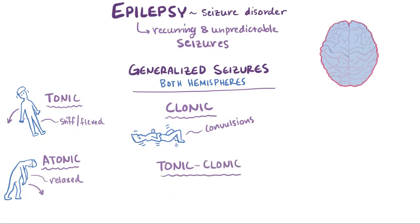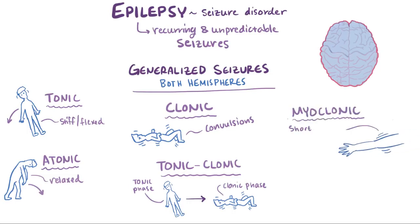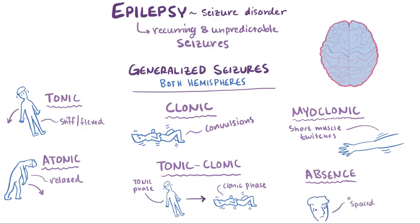Tonic-clonic seizures are the most common generalized seizures, where people experience a tonic phase where the muscles suddenly tense up, followed by a clonic phase where muscles rapidly contract and relax. Myoclonic seizures are short muscle twitches, sometimes just a single twitch but sometimes many in a short amount of time. Finally, there are absence seizures, where patients have impaired awareness or responsiveness, generally with the only outward sign being that the person looks like they're spaced out.